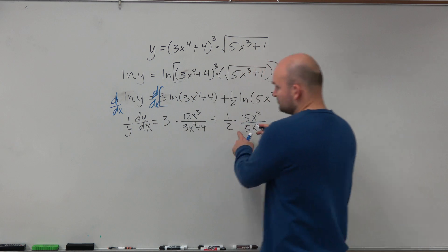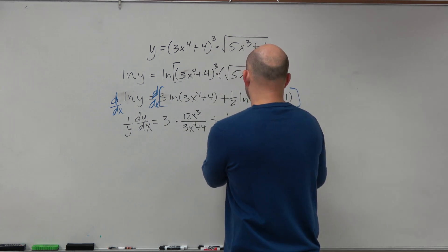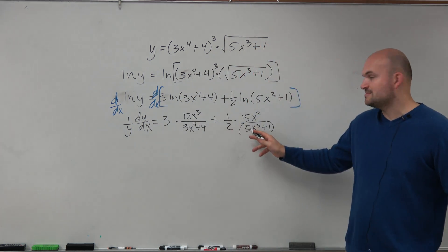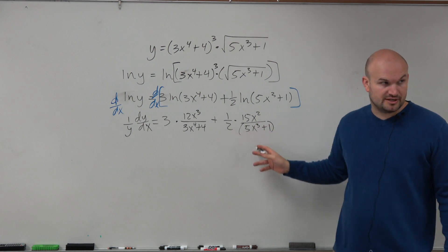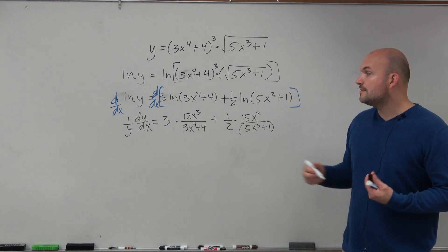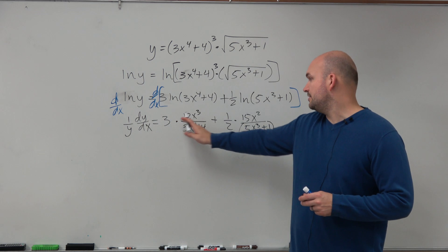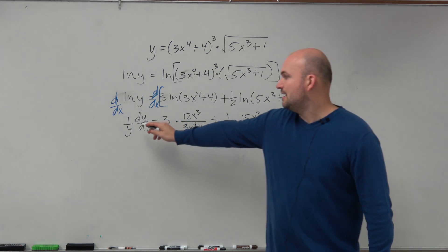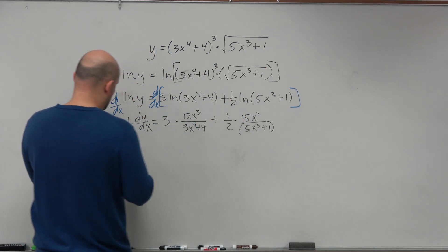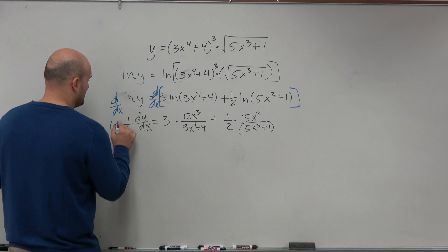Make sure you guys use parentheses here. Just be careful, because we don't want to do the 2 times the 5 and forget that it's actually an expression. And therefore, we can obviously multiply across. And then, to get the y to solve for dy dx, we're just going to multiply by y on both sides.